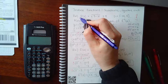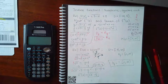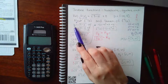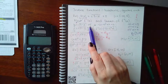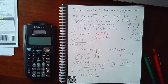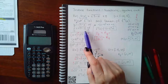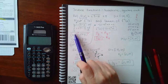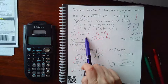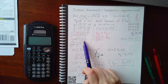We change the function notation f of x into just y. Then we interchange the x's and y's — all y's become x's and all x's become y's. Then we start solving for y. First, we isolate the radical by subtracting 5 from both sides, giving x minus 5 on the left and the square root of 3 minus y on the right. To get rid of the square root, we square both sides, and the radical cancels, leaving just the radicand 3 minus y.